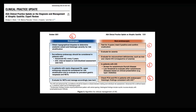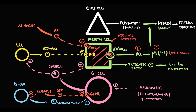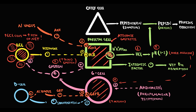Atrophic gastritis causes increasing blood gastrin levels, which significantly increases the risk of neuroendocrine tumors. As parietal cell numbers decrease, hydrochloric acid secretion decreases and gastric pH rises. Increasing gastric pH stimulates G cells to produce more gastrin, so hypergastrinemia develops. Increasing gastrin then overstimulates enterochromaffin-like cells, causing them to hyperproliferate — and this hyperstimulation of enterochromaffin-like cells leads to neuroendocrine tumor formation.